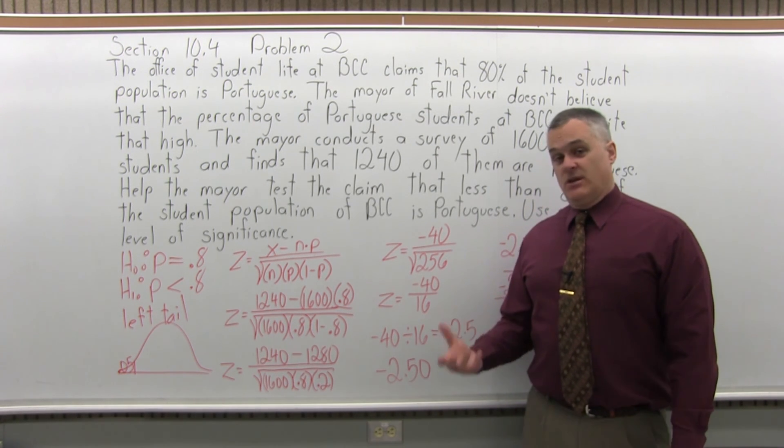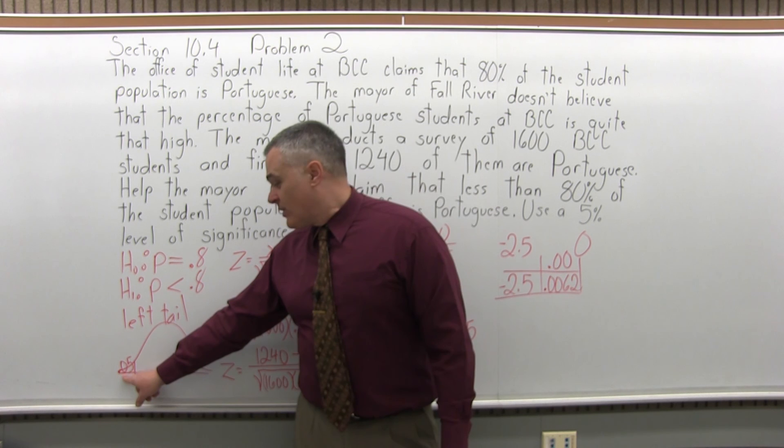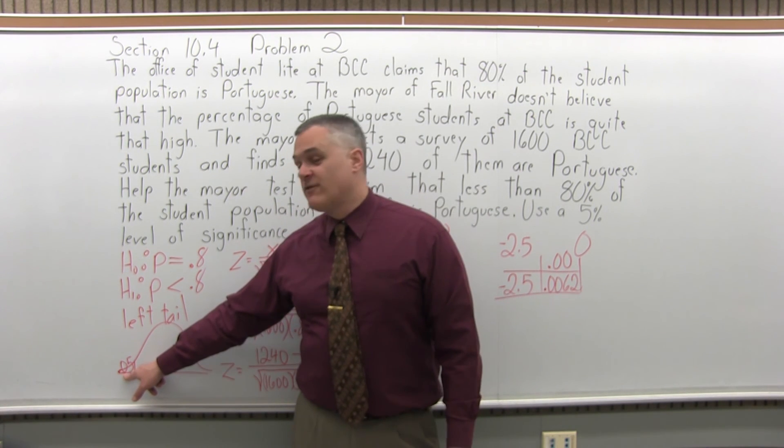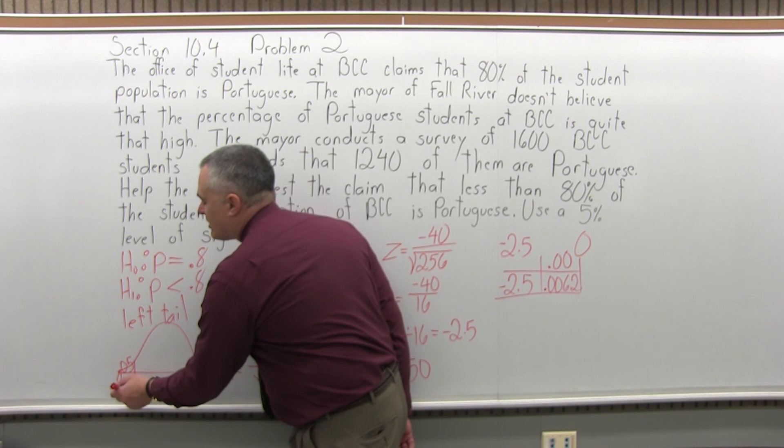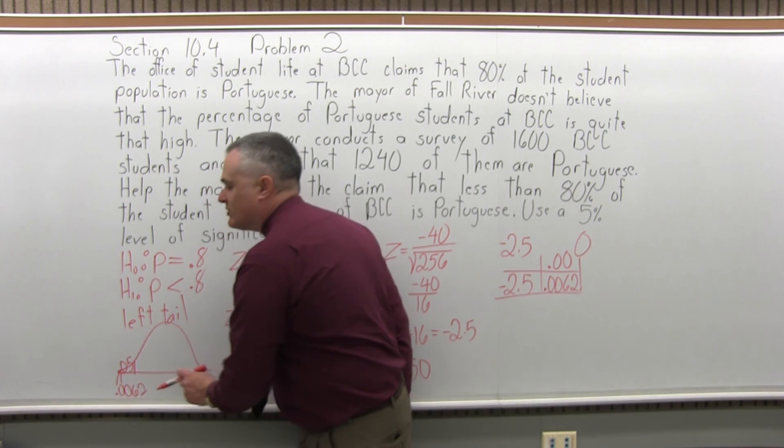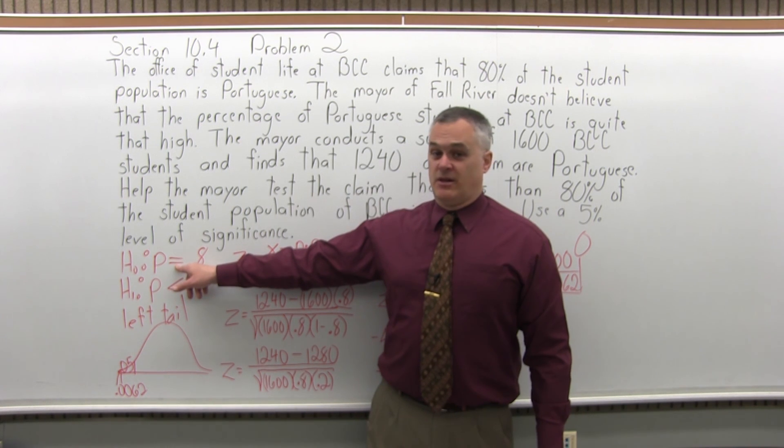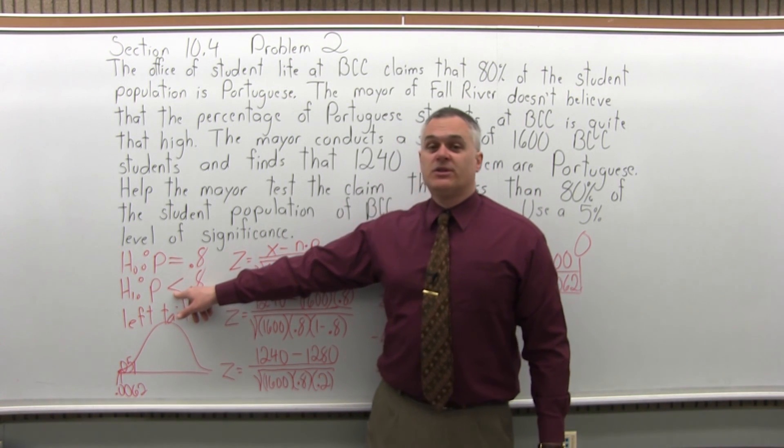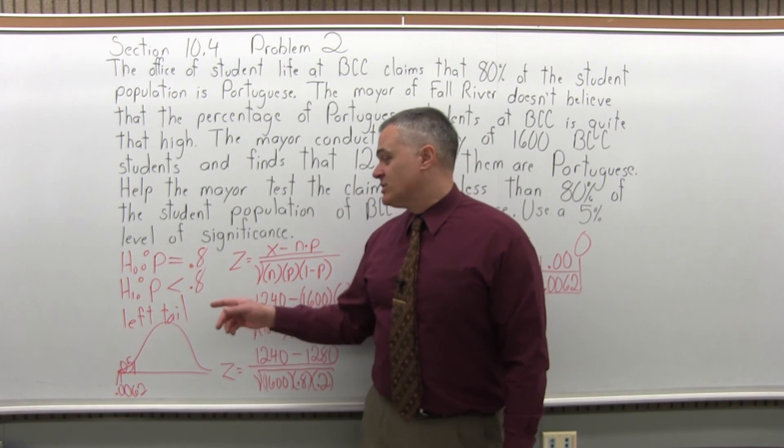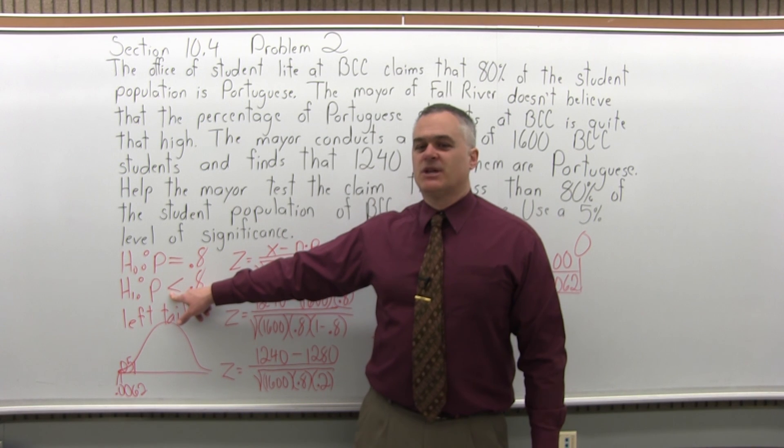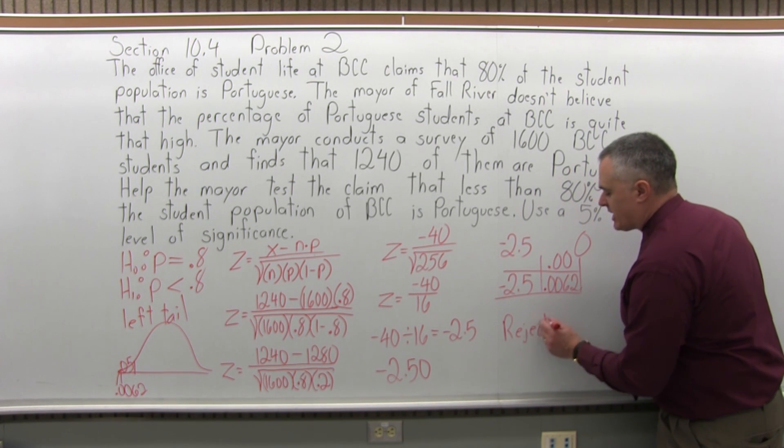State your conclusion. Do we reject the null or fail to reject the null? So the question is, does .0062 go all the way out into that critical value of 0.05? Notice the number of zeros. .0062 goes way out. That's not 0.6, it's .0062. So like if this is $5, this is just $0.62. You're way into the critical region. So when you go into the critical region, your conclusion is reject the null hypothesis, which means you feel the alternate is more likely to be true. That if you really did evaluate all the people at BCC, and there's more than 12,000 most years, that a little less than 80% is Portuguese. So my conclusion, reject the null hypothesis.